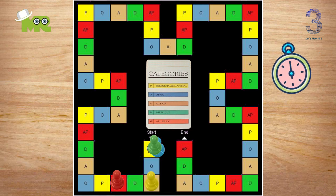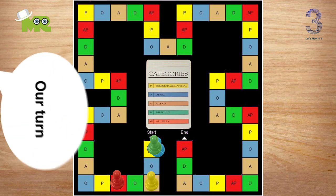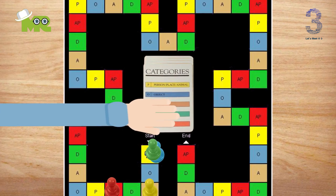If teammates don't guess the word in time, they pass the die to the team on the left, who begins by drawing a word card.